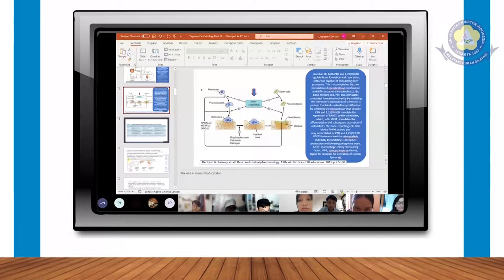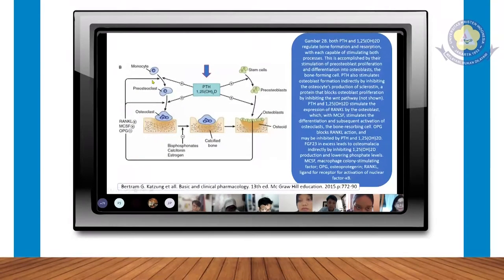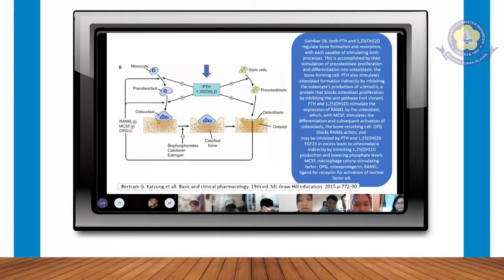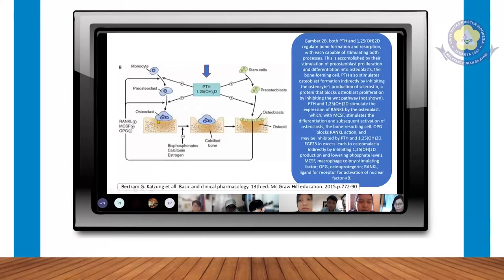Kalau RANKL, RANKL tadi yang denosumab, ini kan ada monosit di selnya, lalu terbentuk preosteoclast, lalu terbentuk yang namanya osteoclast. Normalnya RANKL meningkatkan dari preosteoclast menjadi osteoclast. Kalau RANKL dihambat, berarti preosteoclastnya akan sedikit yang membentuk osteoclast. Kalau osteoclast selnya tidak terbentuk, maka untuk proses selanjutnya ke tulang, resorpsinya akan lebih kurang.